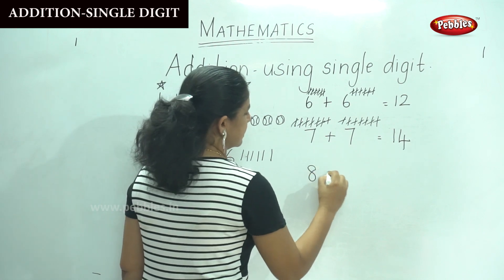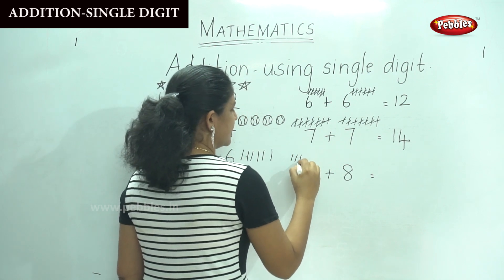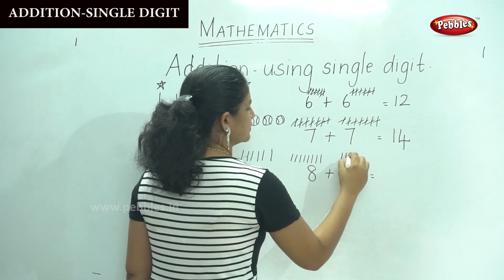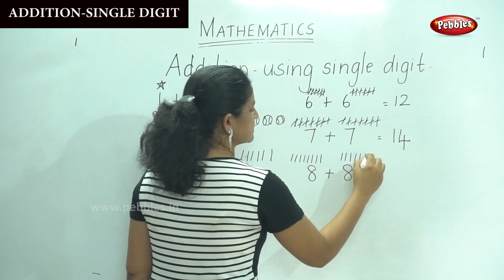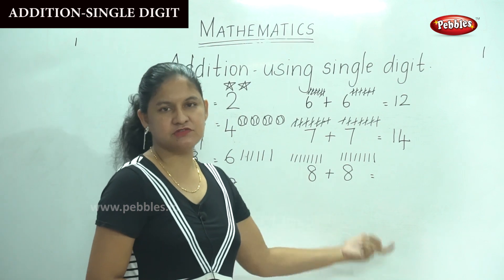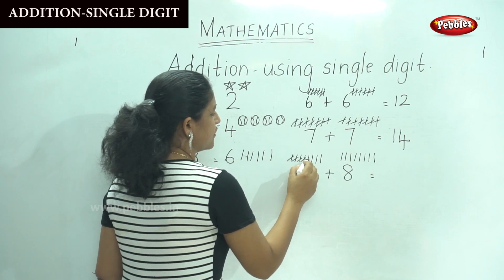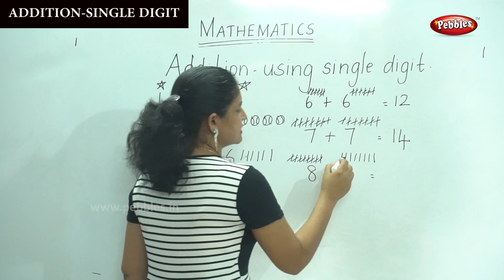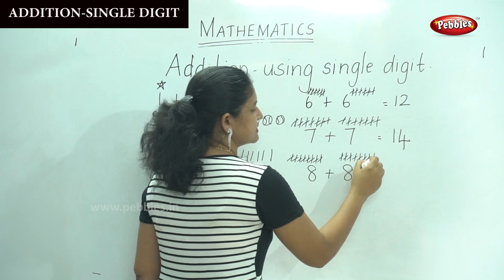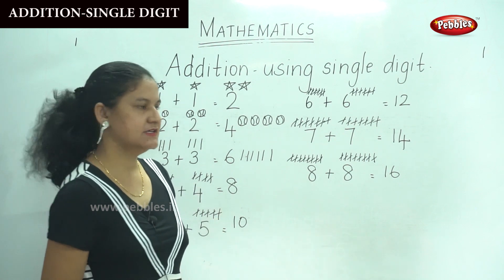The next is 8 plus 8. Drawing 8 sticks on each side: 1, 2, 3, 4, 5, 6, 7, 8 and 1, 2, 3, 4, 5, 6, 7, 8. Counting all the sticks: 1, 2, 3, 4, 5, 6, 7, 8, 9, 10, 11, 12, 13, 14, 15, 16. So 8 plus 8 gives us number 16.